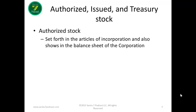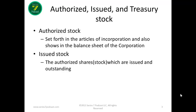Authorized stock is set forth in the Articles of Incorporation and it shows up on the balance sheet. When you look at a balance sheet, you will see in the details the total authorized shares and the total issued and outstanding shares. Issued shares are simply the stock which has been issued and is outstanding.